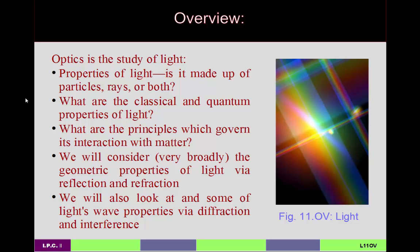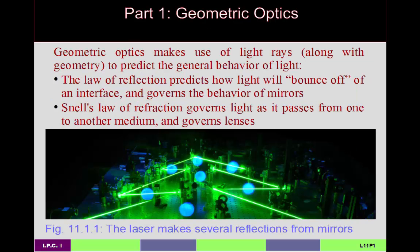On the one hand we'll look at geometric properties of light, which include the laws of reflection and of refraction, and basically how images get formed via reflection and via refraction — in other words, by using a mirror or using a lens. And then we'll also look at some of the more wave-like properties, which includes the fact that light diffracts and that light waves can interfere with each other. Today I want to do part one: geometric optics, covering the law of reflection and Snell's law of refraction.